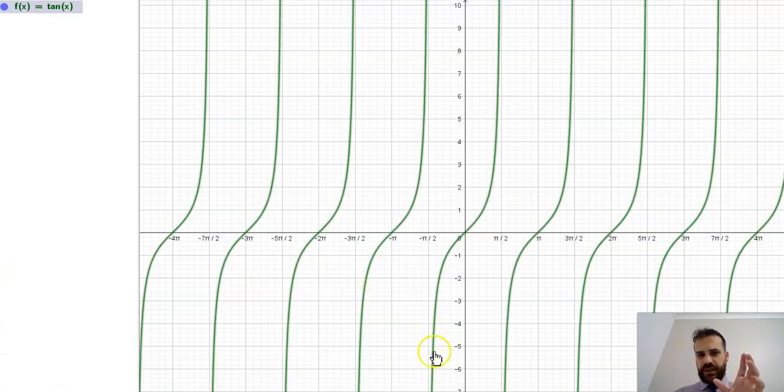This is what our tangent function looks like. A couple of things to note. It's always going uphill, constantly increasing. It has a bunch of roots at 0, π, 2π, 3π, and 4π, and it has asymptotes at π/2, 3π/2, 5π/2, 7π/2, etc.